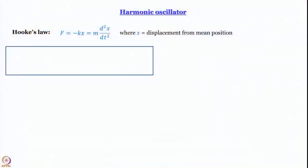Why should we discuss the harmonic oscillator in a quantum chemistry course? The biggest reason from the point of view of a chemist is that a harmonic oscillator provides an approximate model for a vibrating diatomic molecule. The force constant k tells us how strong a spring is, and we approximate the chemical bond between two atoms as a spring with spring constant k. So k becomes bond strength, and if we can determine it quantum mechanically or spectroscopically, we get a fundamentally important parameter of chemistry.